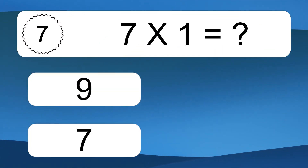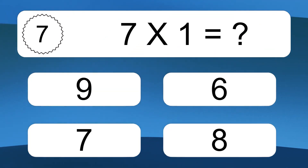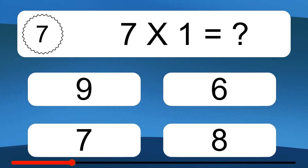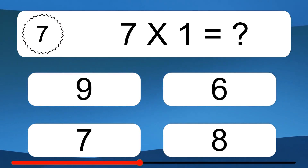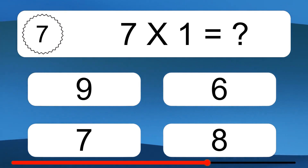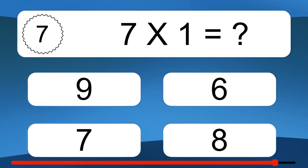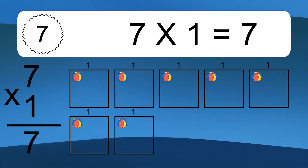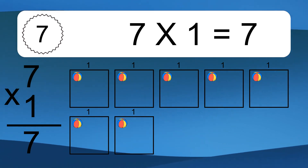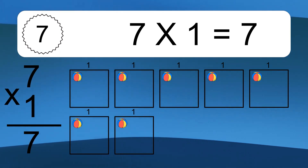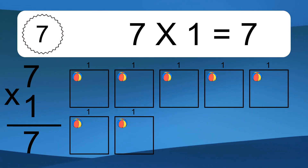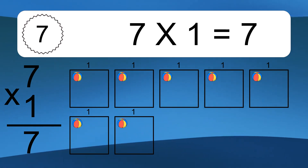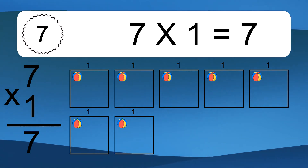Seven times one equals what? Seven times one equals seven. We have seven boxes, and each box has one colorful ball inside. If you count all the balls in all the boxes together, you will have seven times one balls. This equals seven balls.